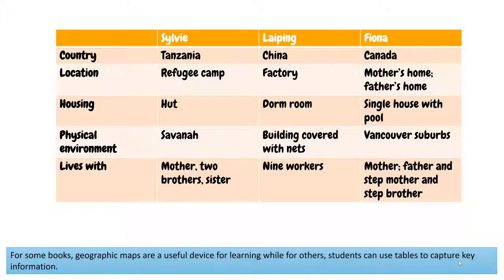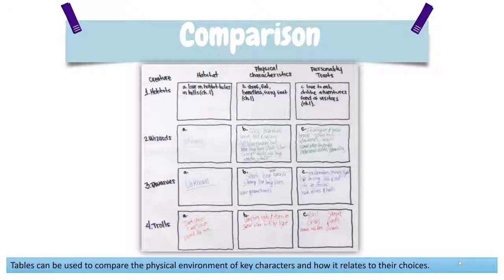For some books, geographic maps are a useful device for learning, while for others, students can use tables to capture key information. Tables can be used to compare the physical environment of key characters and how it relates to their choices.